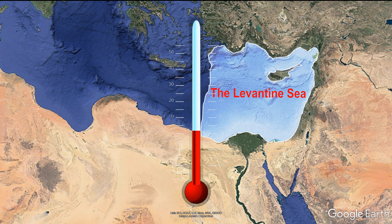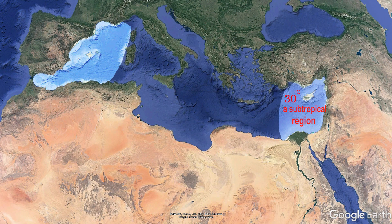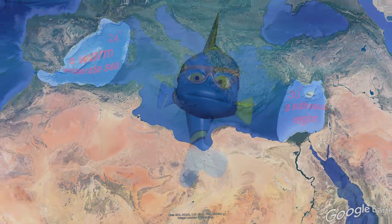Water temperatures in the Levantine Basin vary between 16 to 18 degrees centigrade in winter, up to 30 degrees centigrade in the summer months, and climatically speaking is considered a subtropical region, while the western Mediterranean is considered a warm-temperate sea.